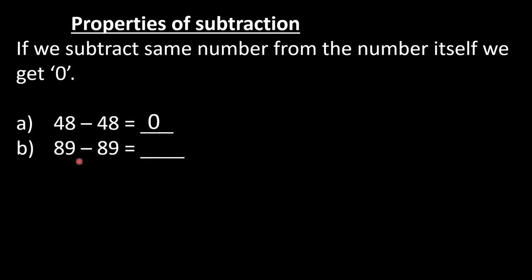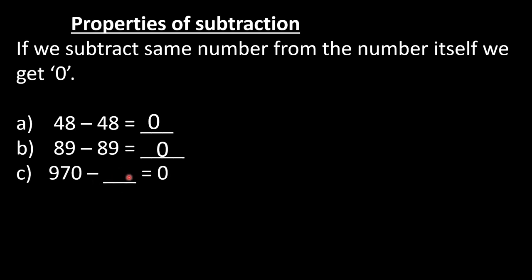In B part, 89 minus 89 — same thing, so we will get 0. When we subtract the same number from the number itself, we get 0. In C part, 970 minus dash is equal to 0. We will get 0 only if we subtract the same number, that is 970.